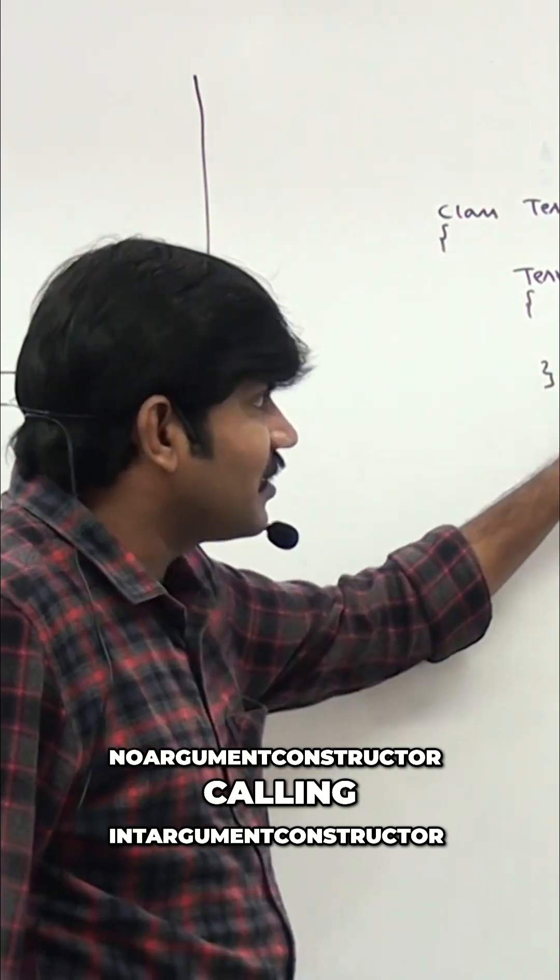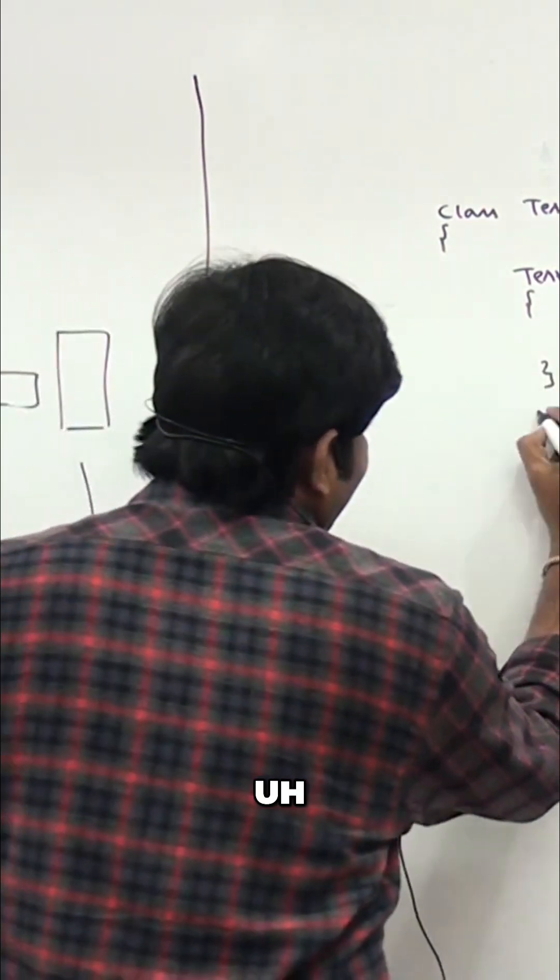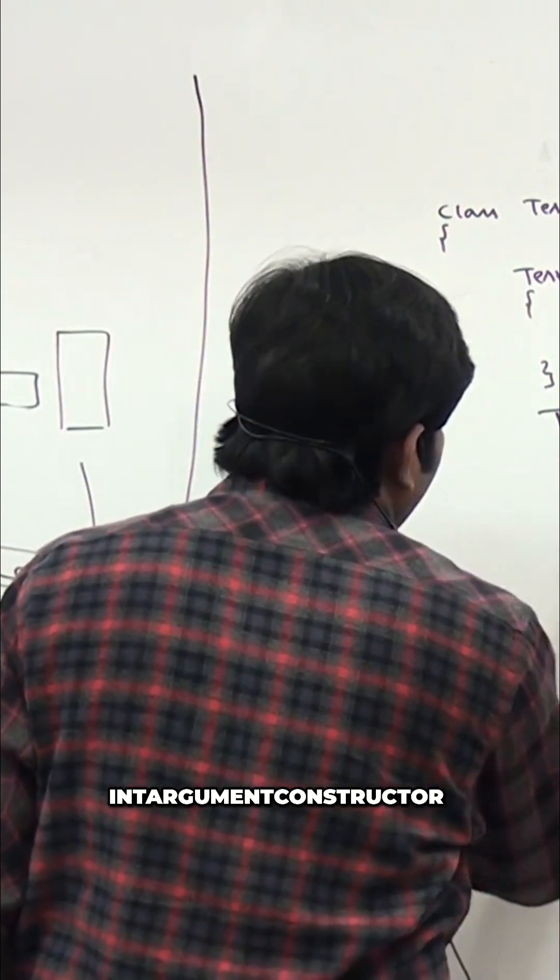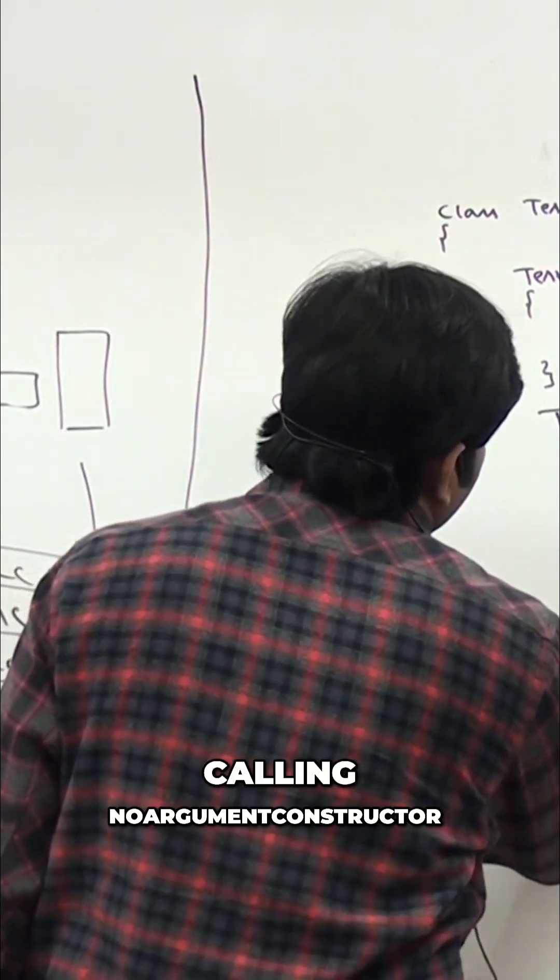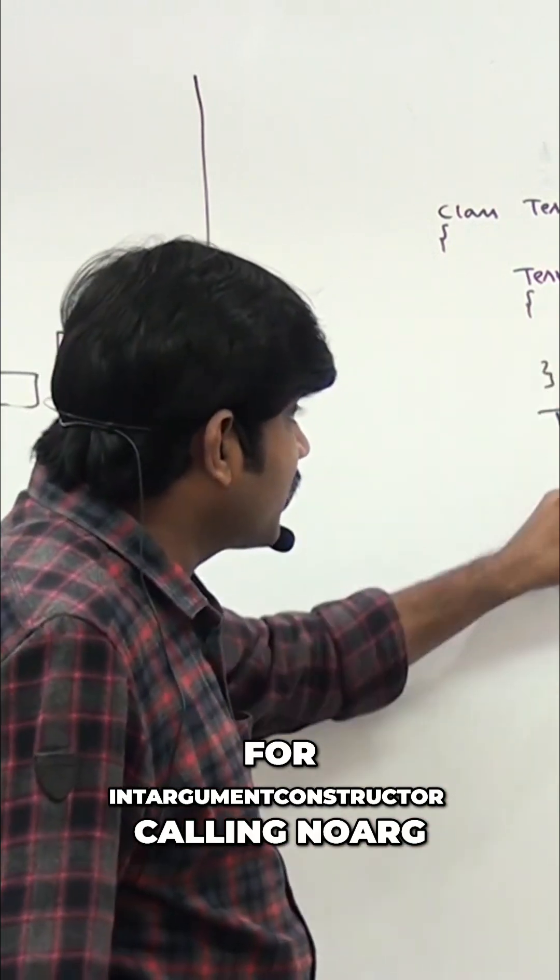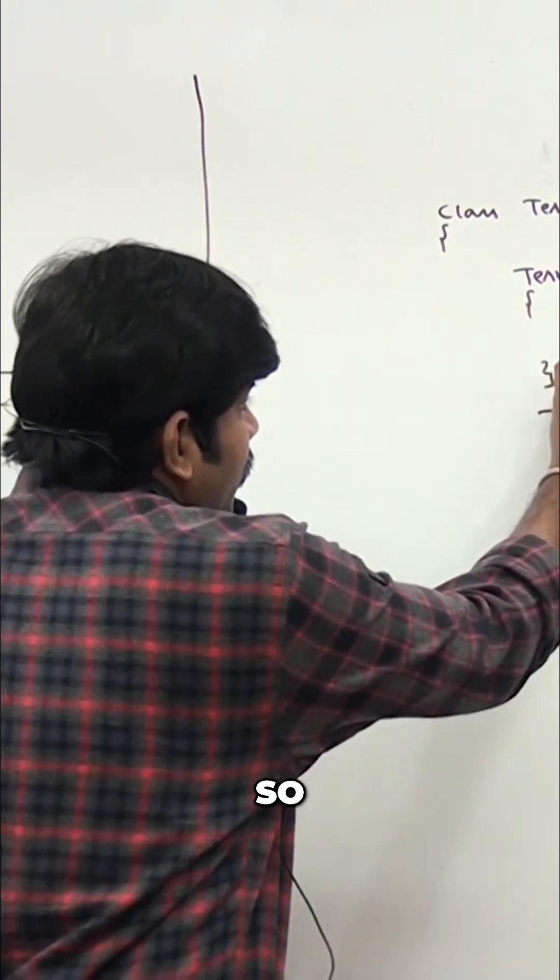The no-argument constructor is calling the integer-argument constructor. Next, the integer-argument constructor is calling the no-argument constructor.